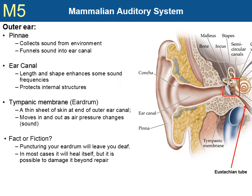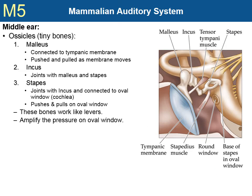Next, we'll focus on the middle ear. The middle ear consists of three ossicles, or tiny bones, and two muscles. The three bones are the malleus, incus, and stapes. The malleus is connected to the tympanic membrane, so when the tympanic membrane is pushed in and out, the malleus moves with it. The incus joints with the malleus and the stapes. The stapes is connected to the oval window of the cochlea, and as the stapes is pushed and pulled by the lever action of the malleus and incus, it pushes and pulls on the oval window of the cochlea.